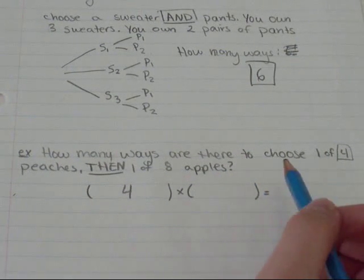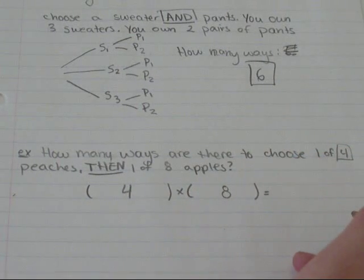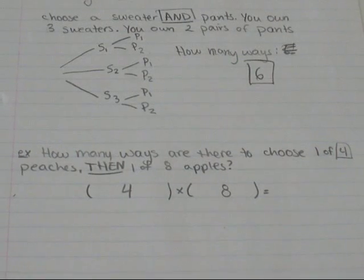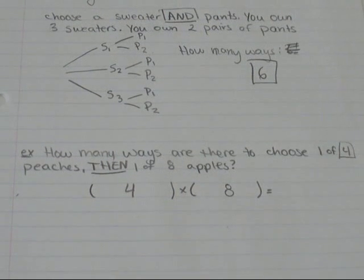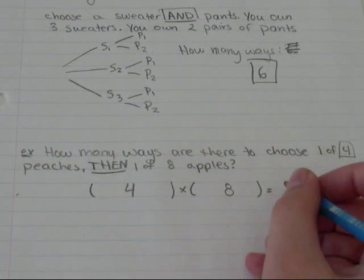Same idea. I can choose apple one, apple two, et cetera. So there's eight ways to choose my apples. So there's 32 ways to choose one of four peaches and one of eight apples. So 32.